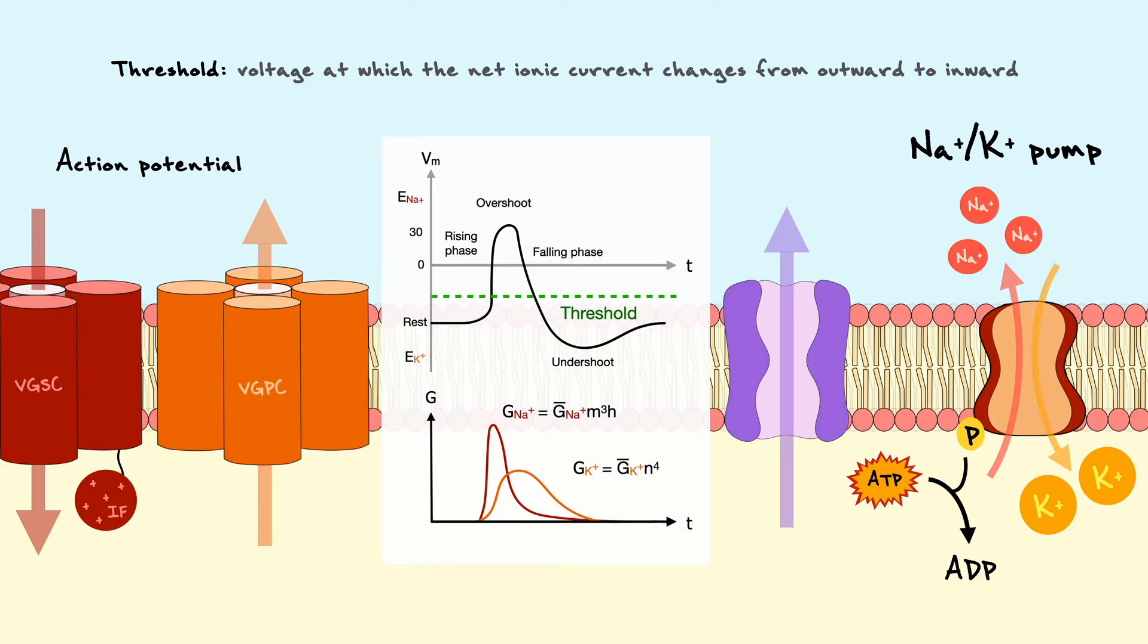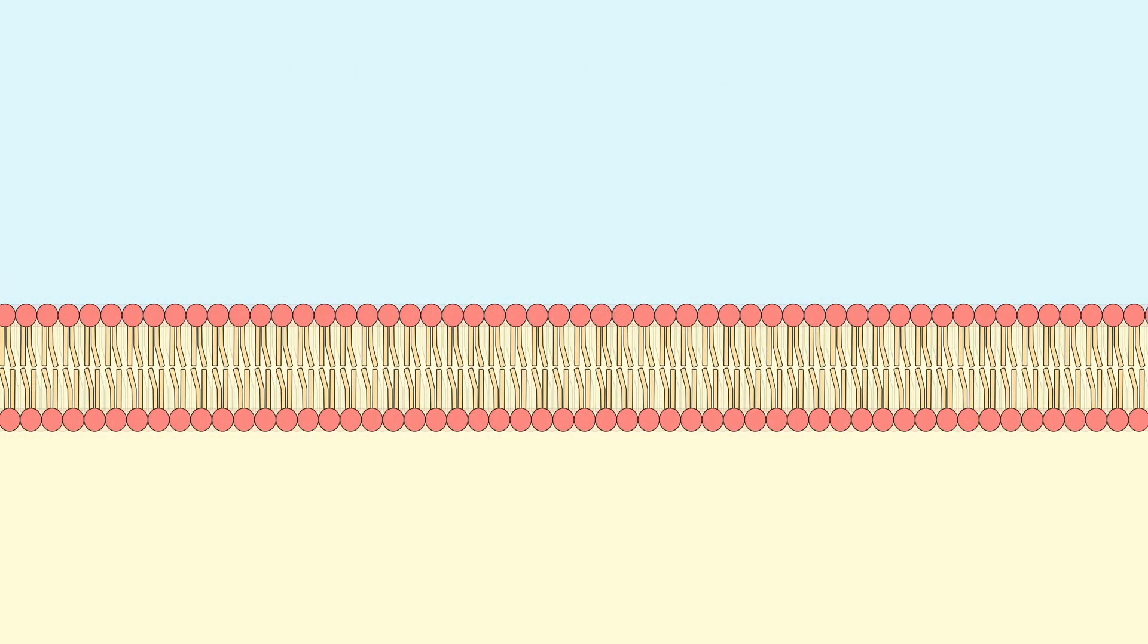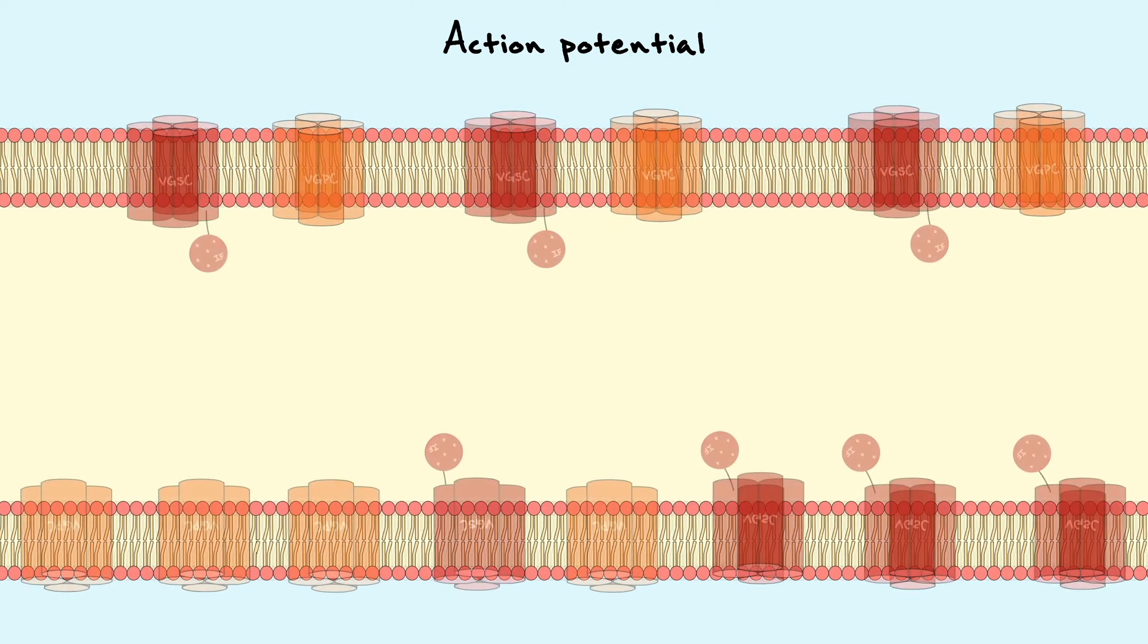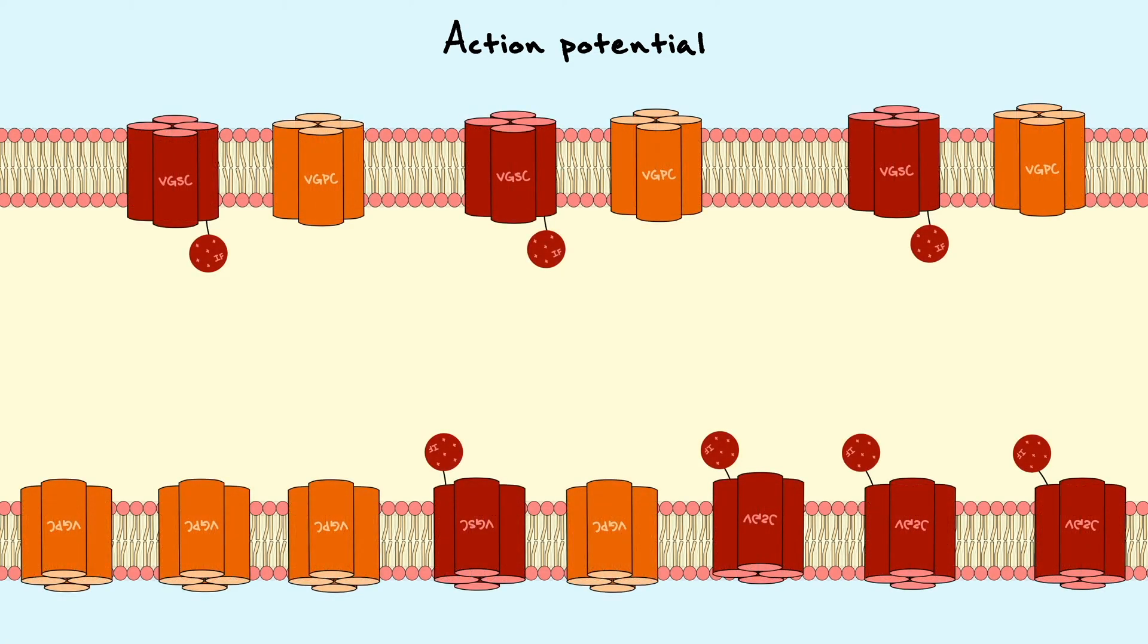This localized view of the action potential is good to understand, but in my opinion, the more interesting aspect of the phenomenon is how it propagates across the axon. Here, let's consider a longer length of the axon, which is filled with multiple voltage-gated potassium and sodium channels.